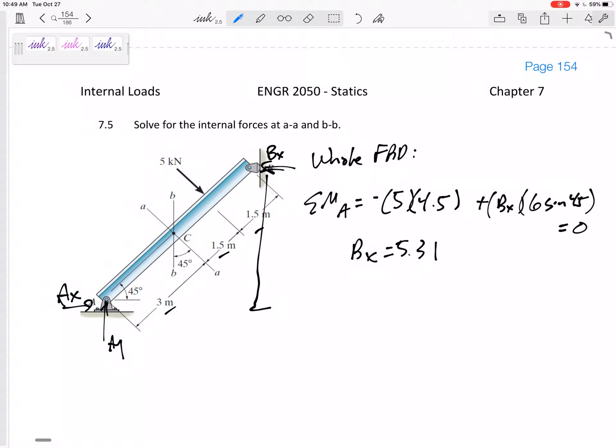So there we go. We would get BX is 5.3 kilonewtons and I'm not even gonna solve for AX and AY. It wouldn't be too much more work but the more of these you do the more you realize that hey maybe you don't have to look at the whole free body diagram or maybe you look at the whole free body diagram but only look at the sum of the moments equation.